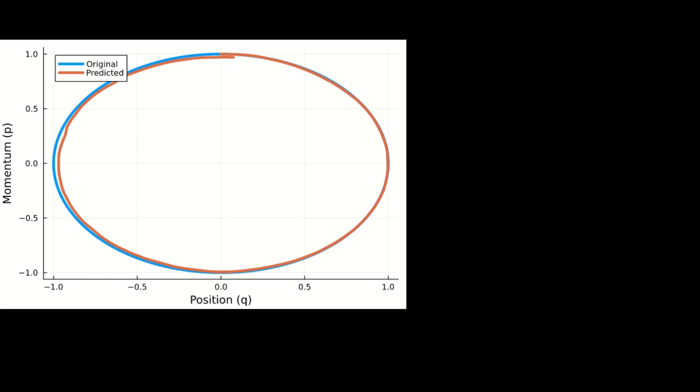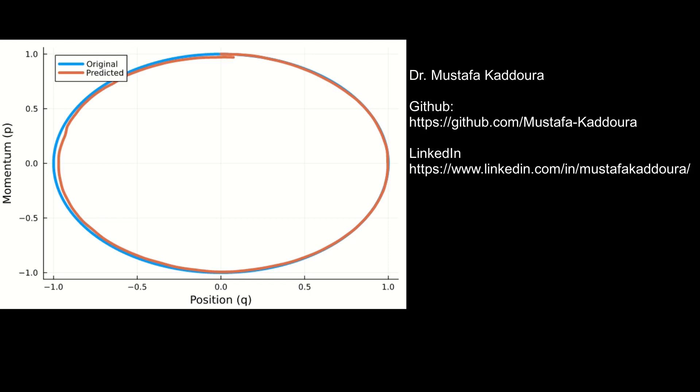Here is the results. We are looking at the position on the horizontal axis and momentum on the vertical axis. Orange is the predicted curve by the network. And blue is the ground truth shape. We can observe a good match.